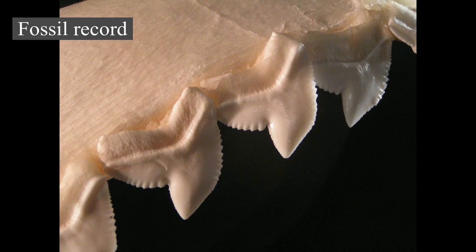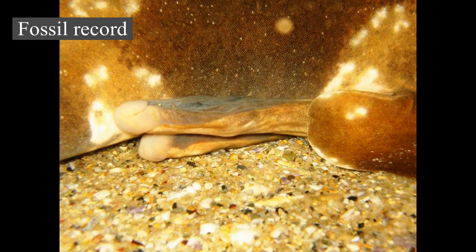Modern sharks belonging to Selachomorpha first appeared and began diversifying during the Jurassic, with the appearance of most modern orders by the end of the period, with diversification continuing until the end of the Cretaceous. In the aftermath of the KPG extinction, sharks became less abundant in the open ocean than ray-finned fish, which radiated subsequent to the event.